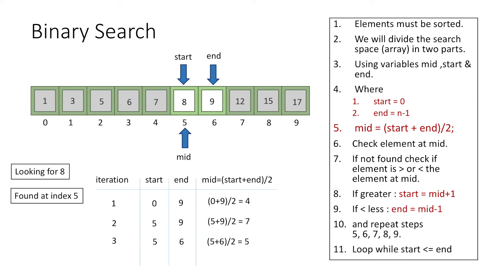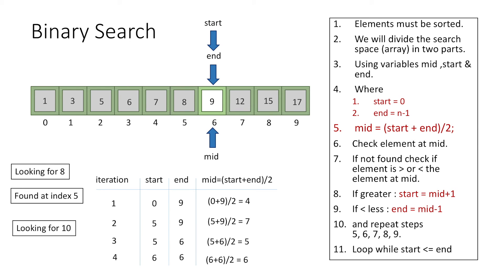For example, suppose we are looking for element 10, which is not in the array. Since 10 is greater than 8, we set start = mid + 1 = 6, end unchanged. The new mid = (6 + 6) / 2 = 6; the value at index 6 is 9. Since 10 is greater than 9, we set start = mid + 1 = 7, but we already know the element is not present, and when start exceeds end, the search terminates.